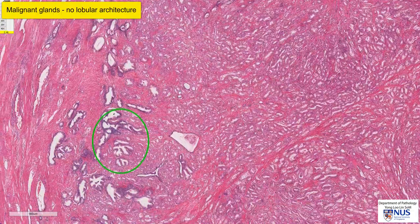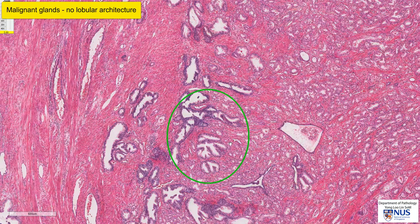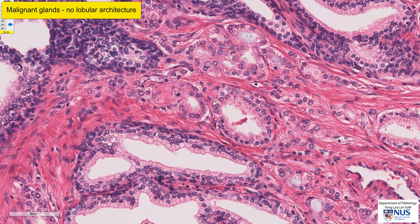Let's move to an area where we can directly compare benign and malignant tissue. Here we have larger benign bilayered prostatic glands, and in between we have malignant glands. For example, we have a malignant gland here, malignant glands all over here, and this is a benign gland.